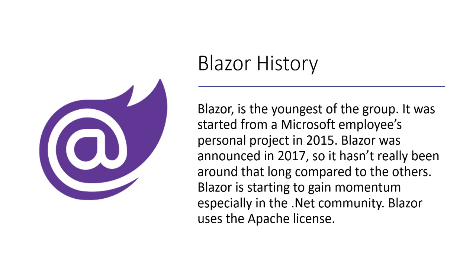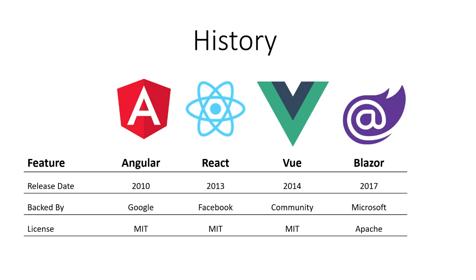Blazor is a little different — it's definitely the youngest of the four. It was started by a Microsoft employee as a personal project and then was announced in 2017 by Microsoft. It really hasn't been around that long, but it's starting to gain momentum within the .NET C# community. Blazor uses a slightly different license, which is the Apache license. Here is a quick breakdown of the bullet points for that history as a quick reference for the main features these offer.